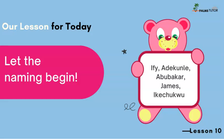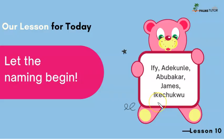Yay, I'm excited! Let's begin. We're so excited about this. Are you ready? So everyone has names, and here are some examples: Ifi, Adekunli, Abubakar, James, Nico, Chico. I'm sure you also have a beautiful name. So let's begin.